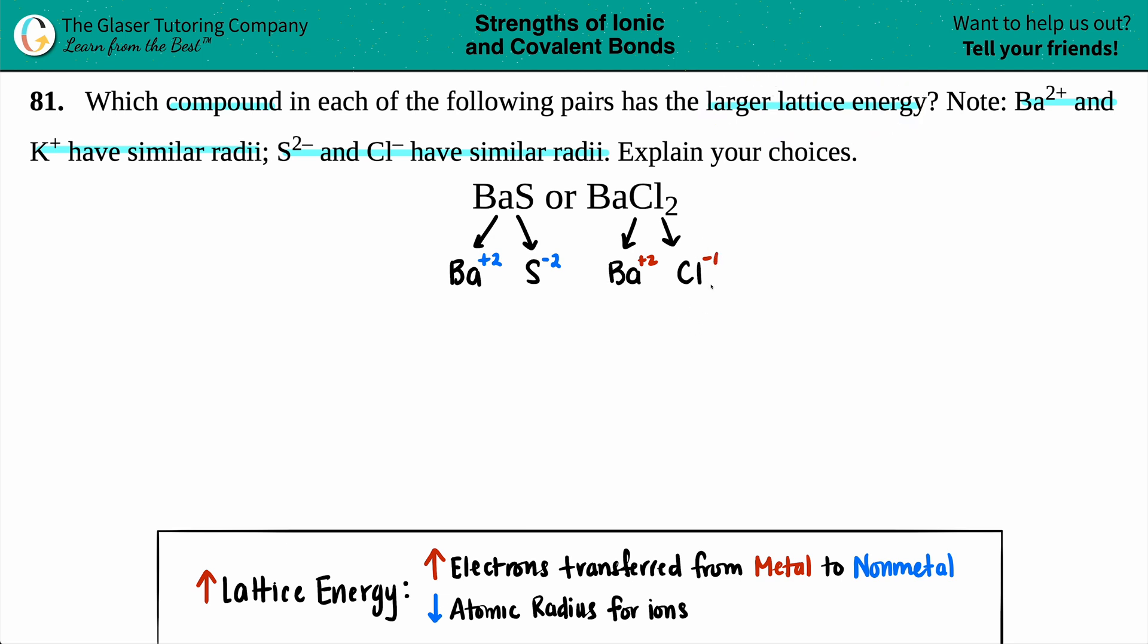If you want to find something that has the larger lattice energy, you're only going to be concerned with things that are different, because the same ions aren't going to make any difference. Don't even bother with the ions that are the same, and the ions that are the same are barium. So get rid of it, no one cares. We've narrowed it down to just the differences between sulfur and chlorine.